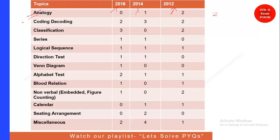Coding and Decoding is another very important topic for this exam. As you can see, across all three years we have seen 2 to 3 questions, so a maximum of 3 questions can be asked from this topic. Coming to Classification, which is nothing but odd-man-out — there is no fixed pattern but you can still expect 2 to 3 questions, so I am putting 2 questions expected from this topic. Coding and Decoding is particularly important because you are continuously seeing 2 to 3 questions in each year.